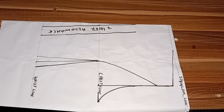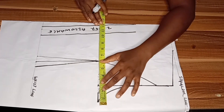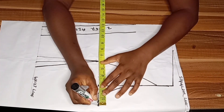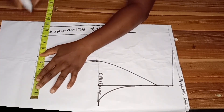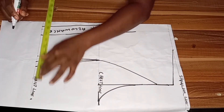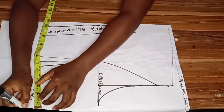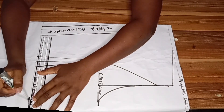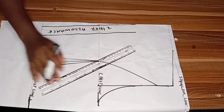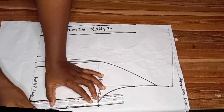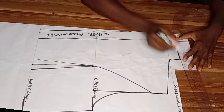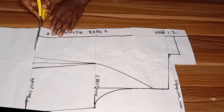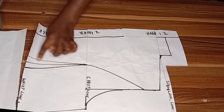I'll divide my bust by four and from the new zipper line I'll input it. I'll divide my waist by four, input it, and return the dart allowance. Now I'm going to connect everything — using my ruler I'll connect it straight into the bust area using half an inch so that it can slope well. Using my curve ruler I'll slant it well, and now I'm going to be cutting.